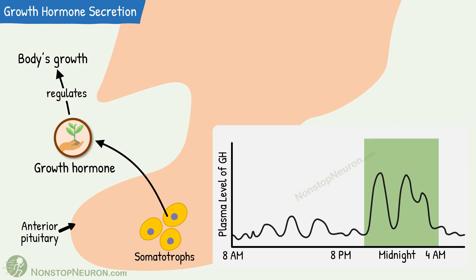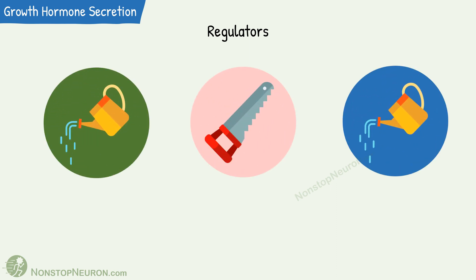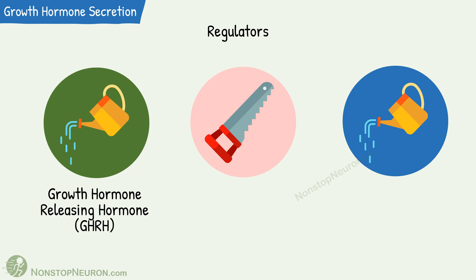Now let's talk about the regulation of growth hormone secretion. Three main regulators of growth hormone release are growth hormone releasing hormone, somatostatin, and ghrelin.